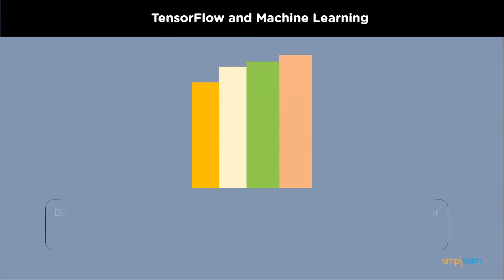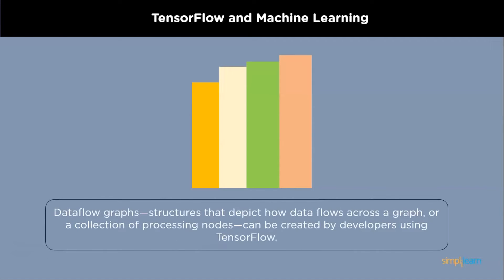Dataflow graphs: structures that depict how data flows across a graph or a collection of processing nodes can be created by developers using TensorFlow. A mathematical operation is represented by each node in the graph, and each edge between nodes is a multi-dimensional data array or tensor.